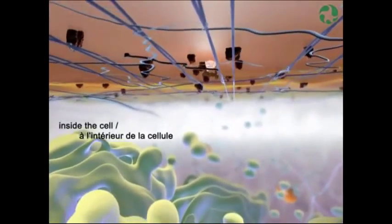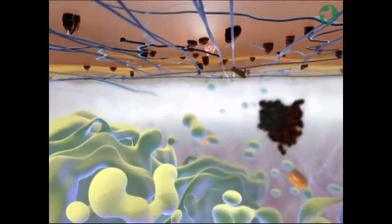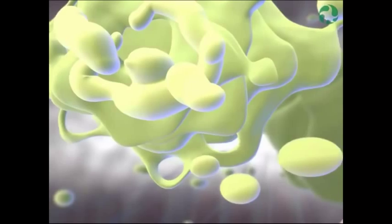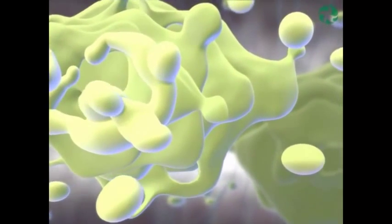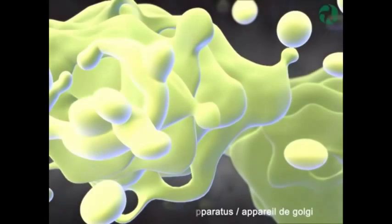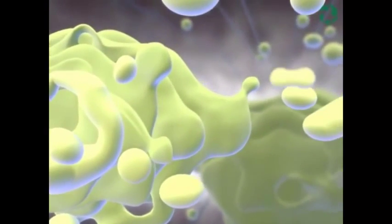And what happens in the cell is the cell is a network of pipes and plumbing and pumps and all kinds of different technologies that make life possible in that cell, that bring the nutrients in and take the waste out and provide energy for the body.